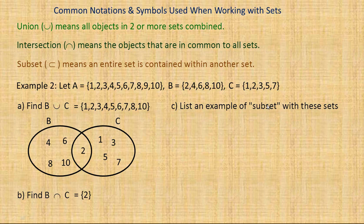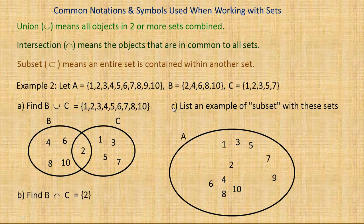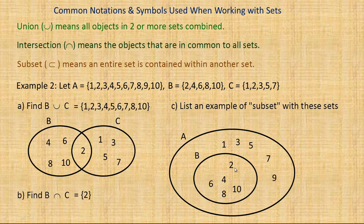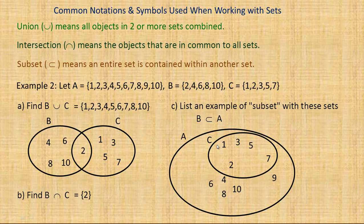The last example illustrates what subset means. Set A contains all the counting numbers one through ten. Notice that B — two, four, six, eight, and ten — is entirely included within A, so B is a subset of A. Similarly, C — one, two, three, five, and seven — is also entirely included within A, so C is a subset of A as well. That's what subset means: every element of the set is within some other larger set. And that's the end of the tutorial.